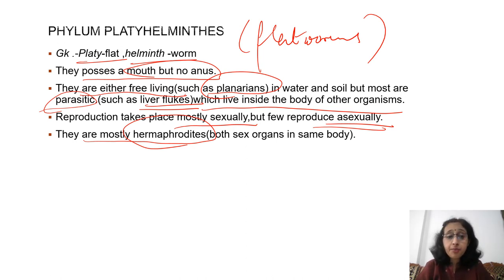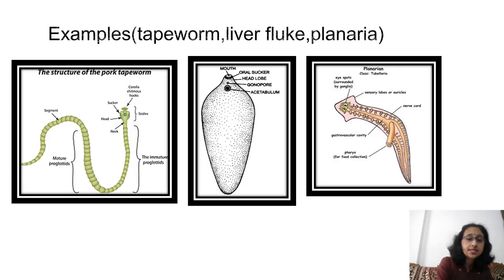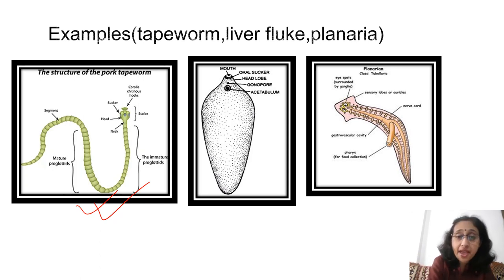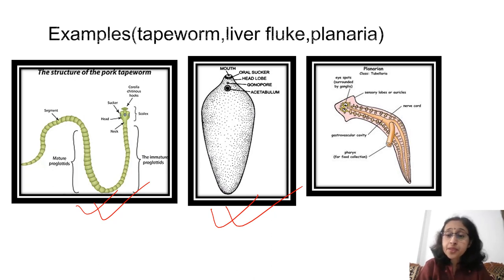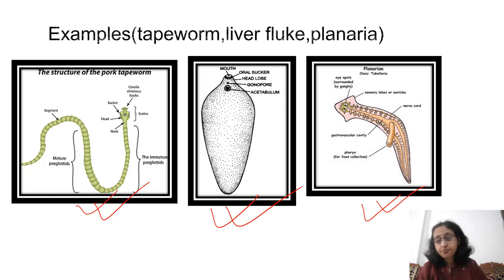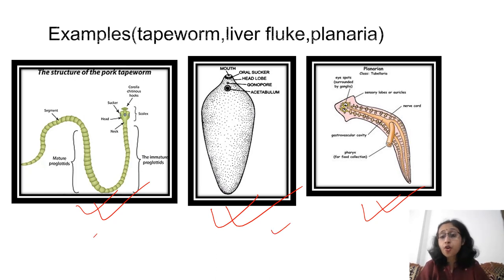Examples of Platyhelminthes: tapeworm, which is flat, lives in the human intestine attached to the intestinal wall acting as a parasite; liver fluke, also parasitic, present in the intestine of cattle (bovines); and Planaria, which is free-living and does not require a host to survive. Tapeworm and liver fluke are both parasitic, depending on a host organism for survival.